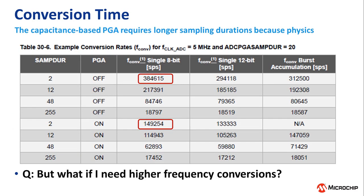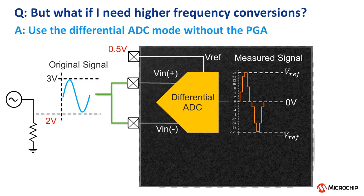The PGA on these devices is capacitance-based, which means that we need more time to sample the incoming signal for the charge to build, and this will reduce the maximum sampling rate we can achieve. Fortunately, there is a way to do this with just the differential ADC not using the PGA, provided you have access to an external voltage reference and can spare another pin to take that reference. I covered this in more detail in another video linked on screen and in the description.